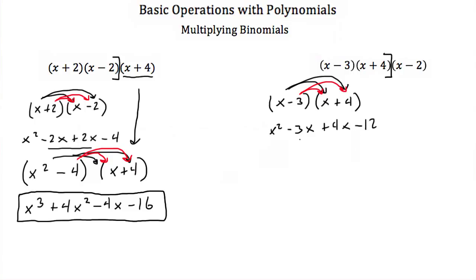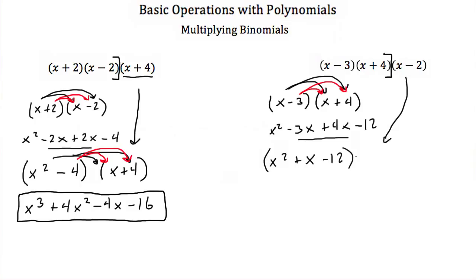Now we combine like terms. We get x squared, then negative 3 plus 4 is positive 1, so positive 1x, minus 12. That gives us x squared plus x minus 12. Then we bring the last binomial, x minus 2, down and multiply our result by it.